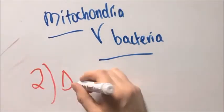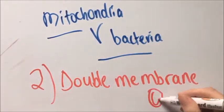Second, the double membranes in both mitochondria and bacteria are separate from the membrane of the host cell.